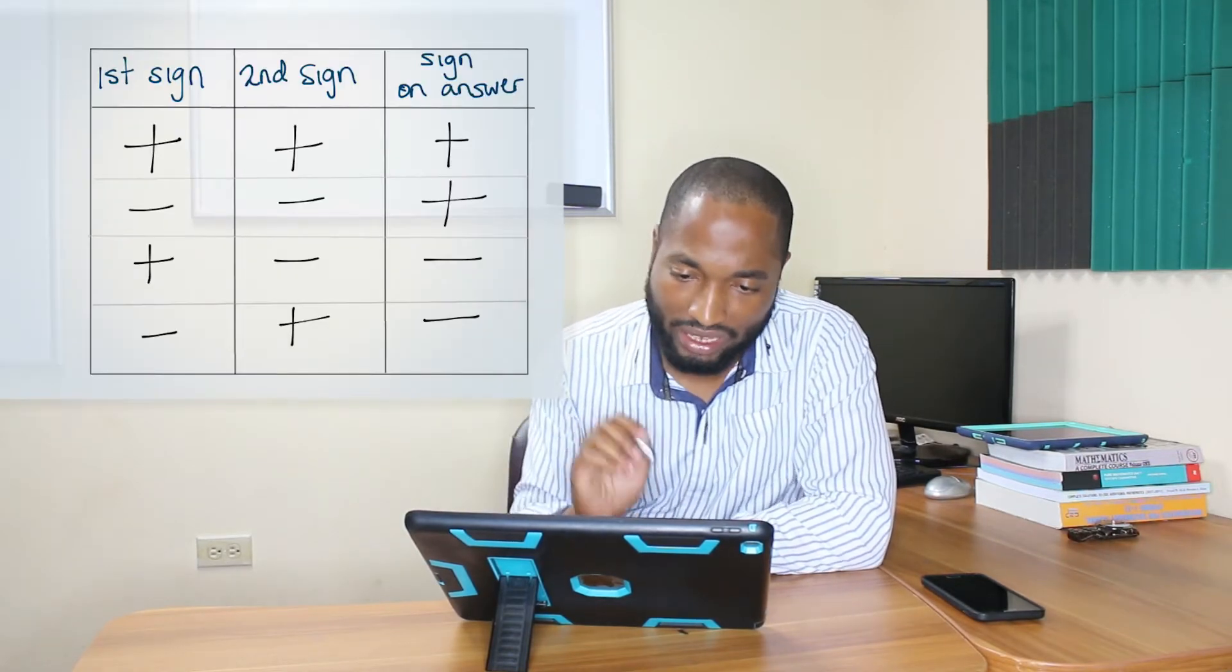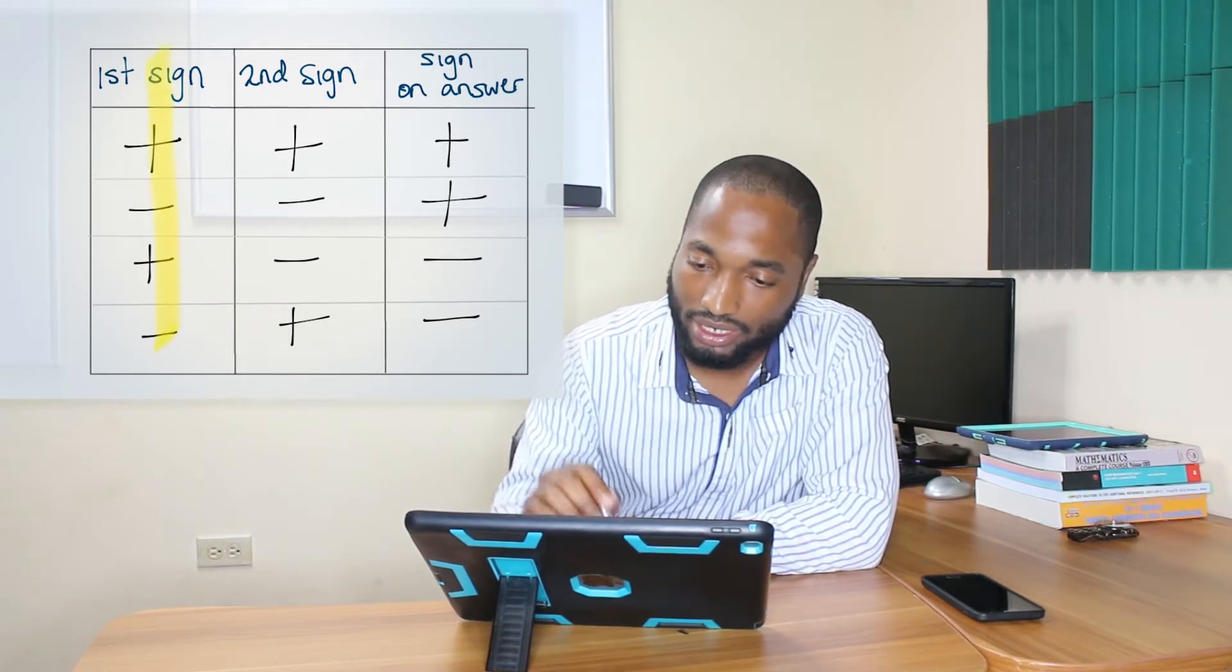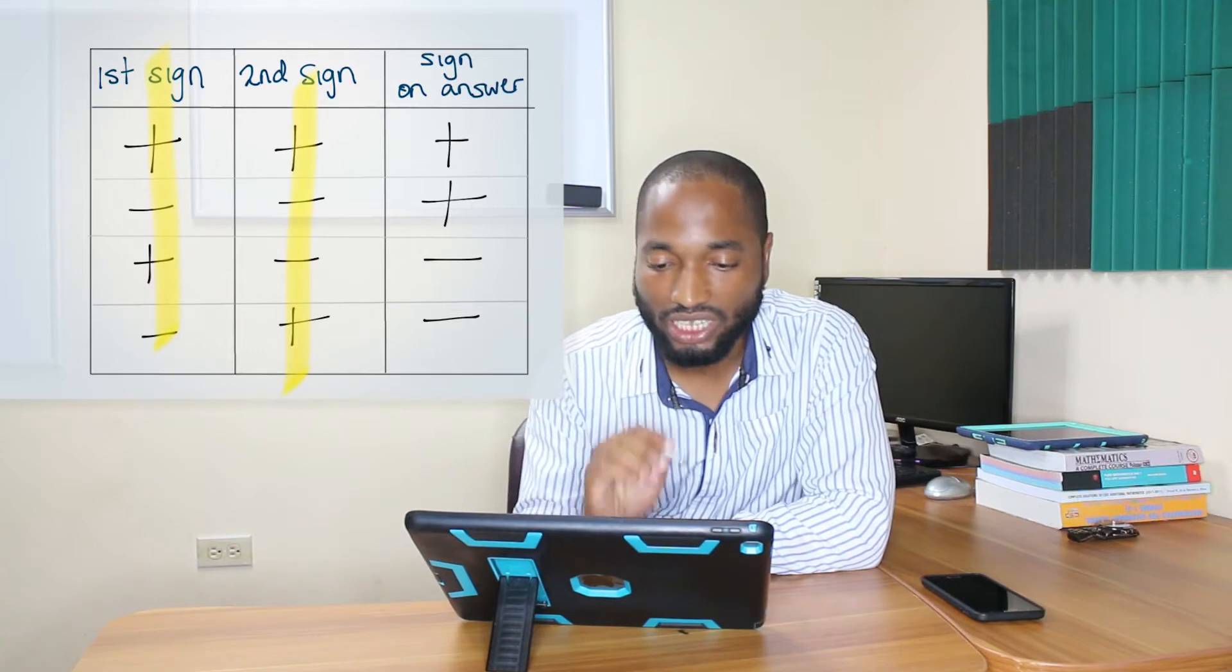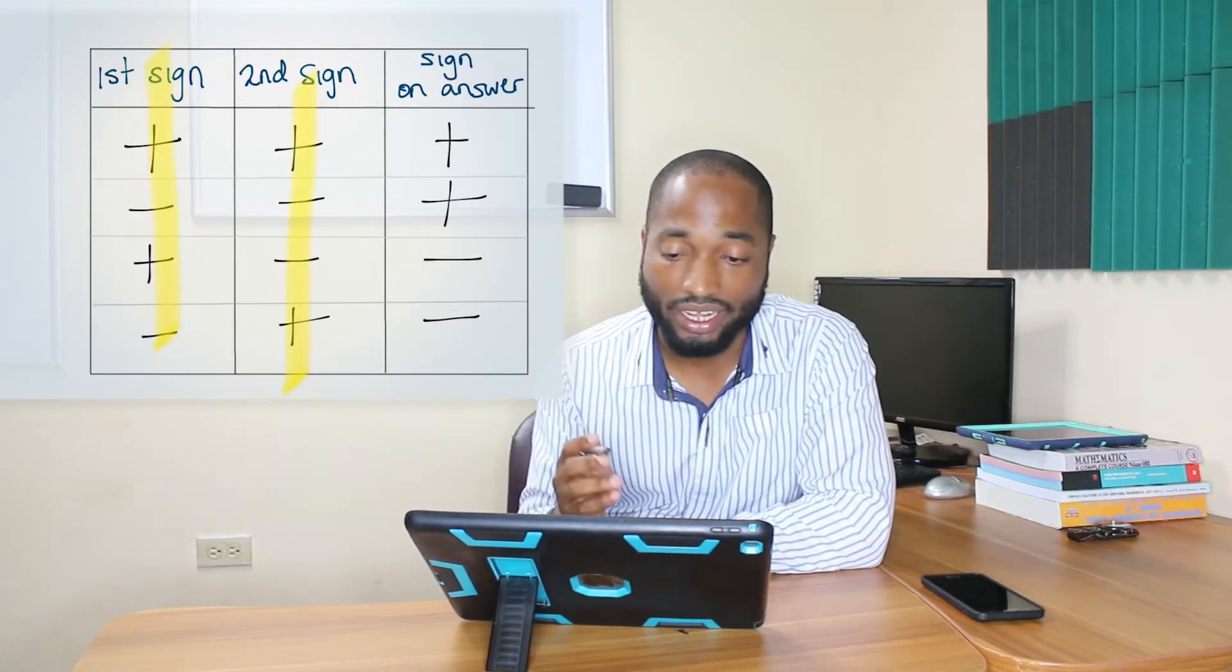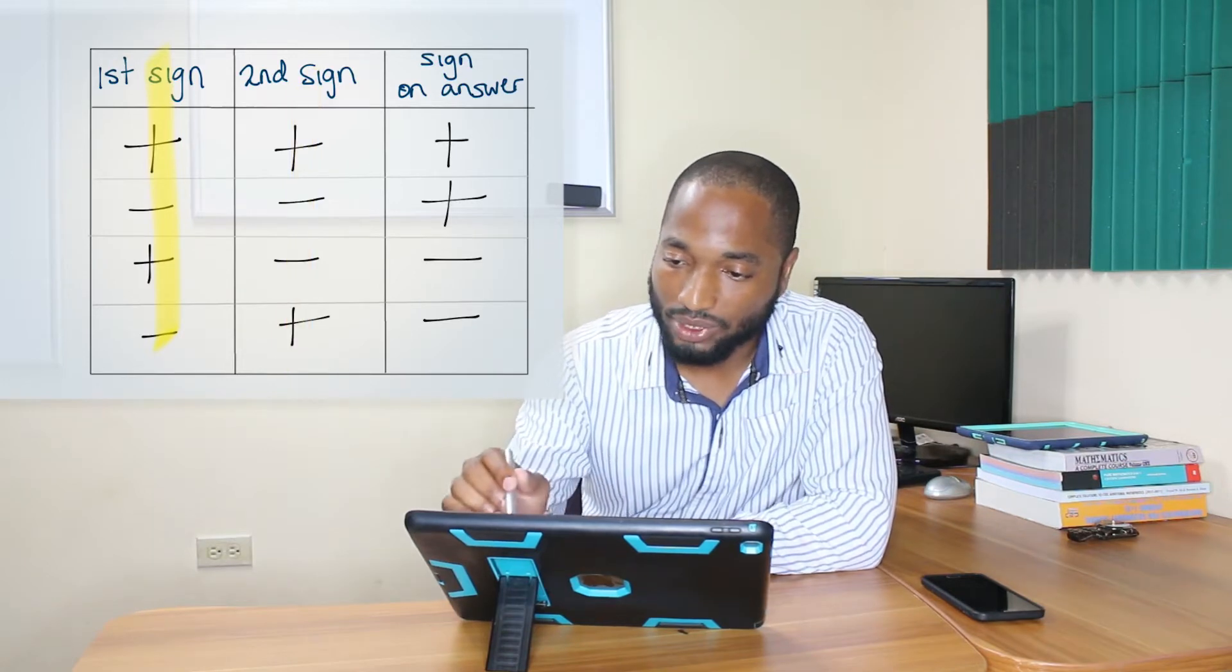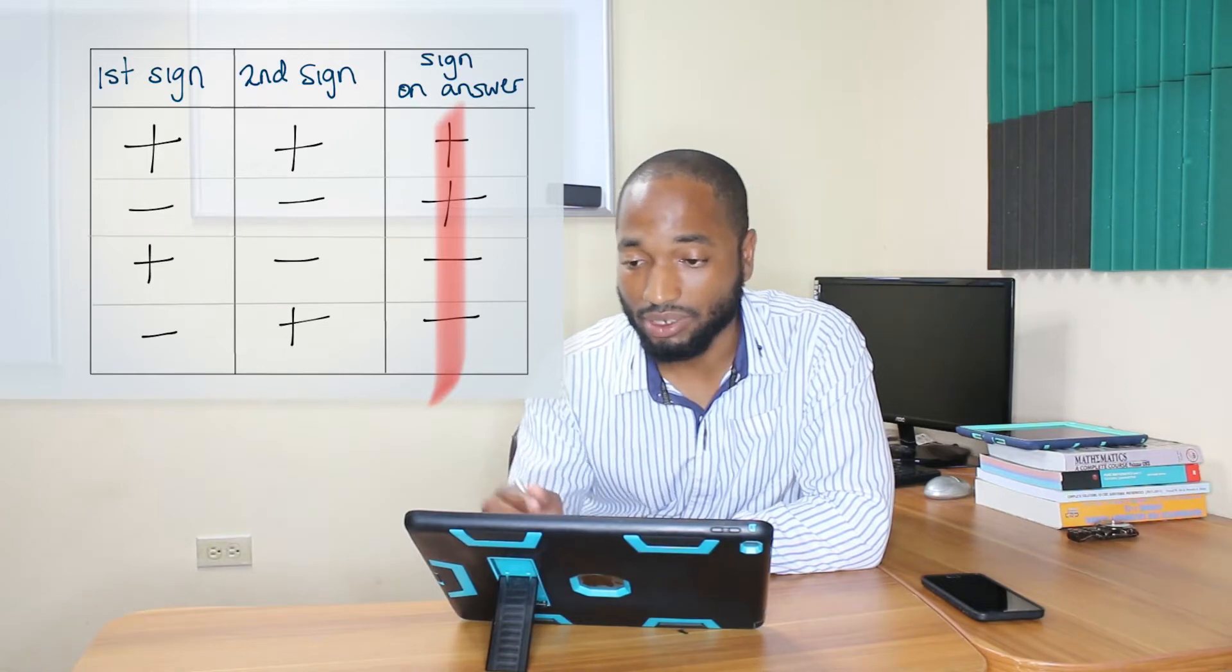First thing you want to do is memorize this table. The first column in the table, the second column in the table, they just tell us the sign that is going to be on the numbers being multiplied or divided. The last column is going to tell us what sign the answer will take.